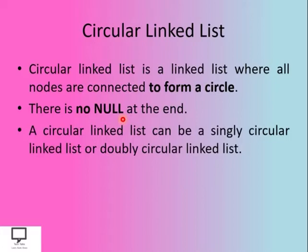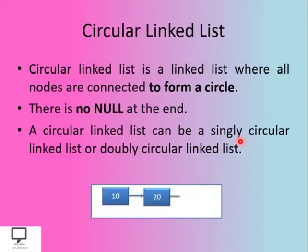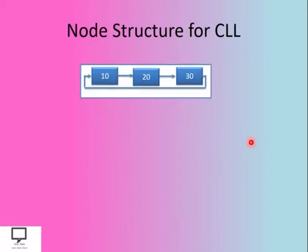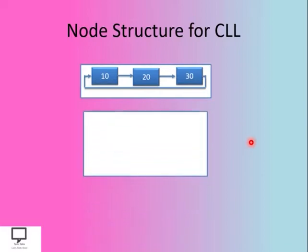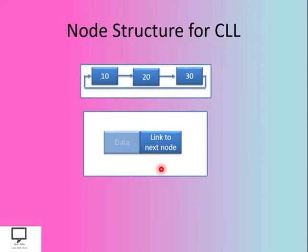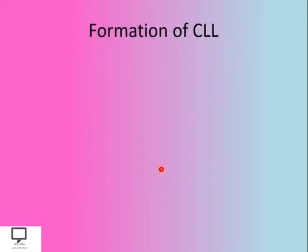A circular linked list can be a singly circular linked list or doubly circular linked list — these are two variations. If it grows in a forward direction only (single direction), it is called a singly circular linked list. If it grows in both forward and reverse directions, it is called a doubly circular linked list. In this video series, we are focusing on the singly circular linked list.